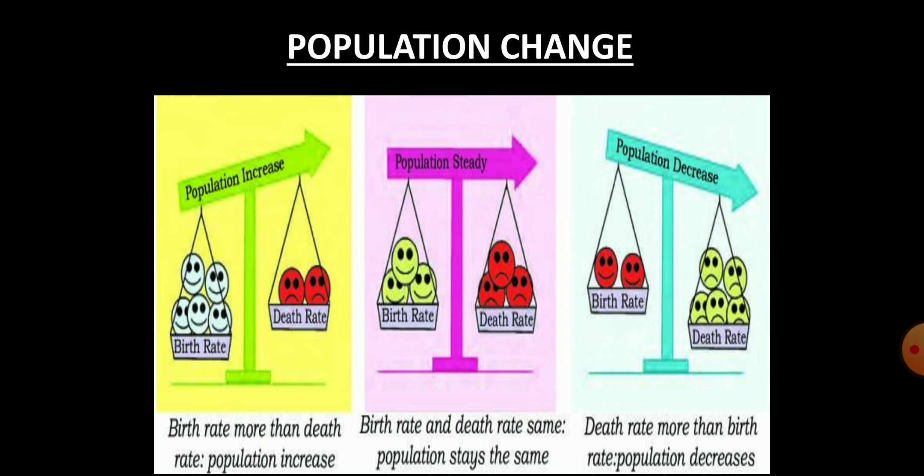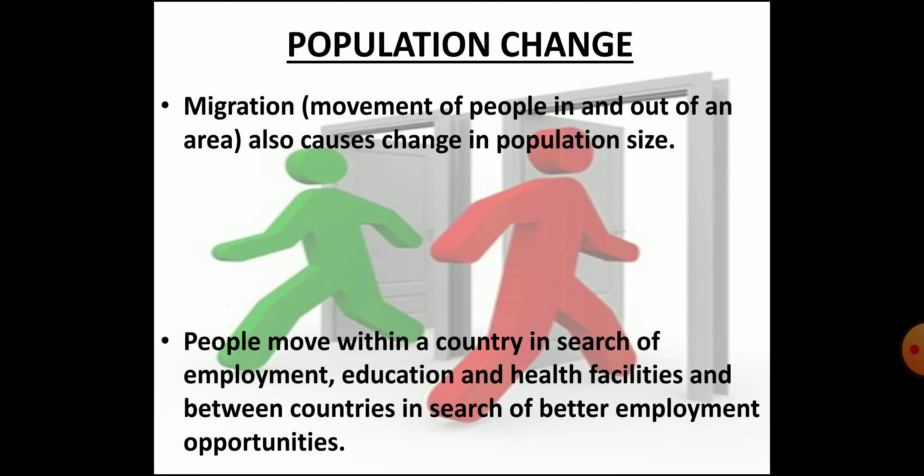Birth and death are the natural causes of population change. However, population change also occurs due to migration. Migration refers to the movement of people in and out of an area. This movement can be within a country — from one state to another or one region to another — or between countries.